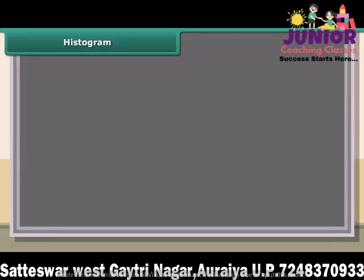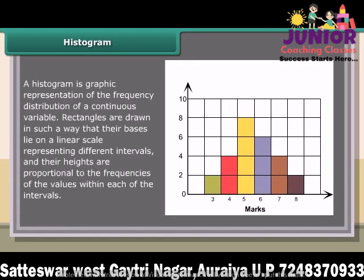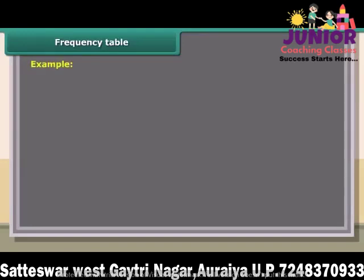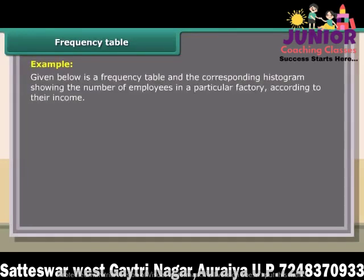A histogram is a graphic representation of the frequency distribution of a continuous variable. Rectangles are drawn such that their bases lie on a linear scale representing different intervals, and their heights are proportional to the frequency of the values within each interval. For example, given below is a frequency table and the corresponding histogram showing the number of employees in a particular factory according to their income.